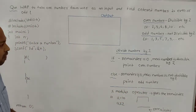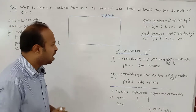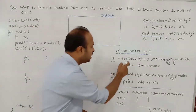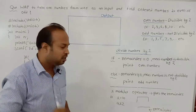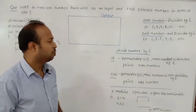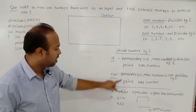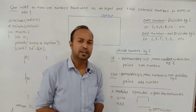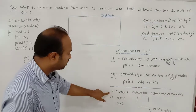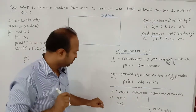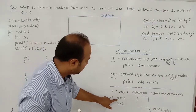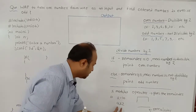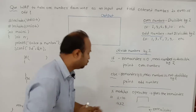How can we find a remainder? By using the modulus operator. We can find the remainder by using the modulus operator — it gives the remainder and is represented by the percentage symbol. For example, if a equals 10, and we write a modulus 2 in the next line.